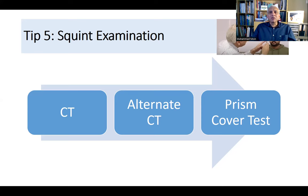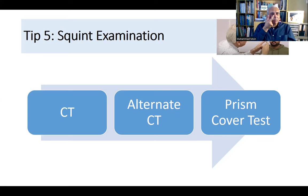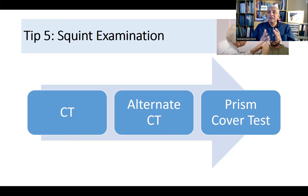Students often cover the wrong eye and see no movement. Know the difference: the prism cover test measures tropia plus phoria, while the alternate cover test measures only tropia. Hold prisms at the edge, not with your thumb on the prism bar, as smudging makes it hard to see through. Position the prism at the correct distance and don't slide it on the patient's eyelid. Give the patient time to fixate on a target and watch for the flicker movement every time you change hands.